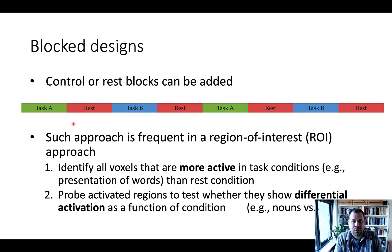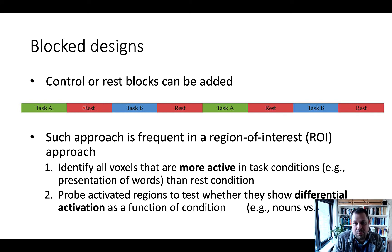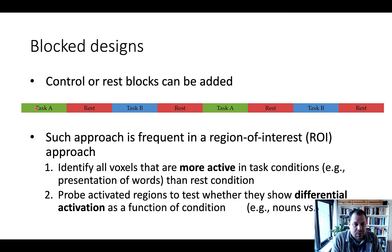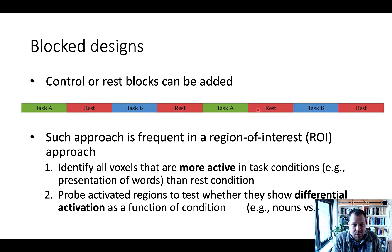To address this, we need a control condition — called 'rest' here, but it could be any suitable control, such as viewing jumbled letters to control for visual activations. Adding this control allows us to look at task A relative to rest, task B relative to rest, and task A plus task B relative to the control condition, revealing regions involved in word processing generally. The drawback is fewer alternations between task A and task B, which reduces detection power.